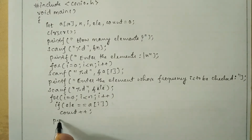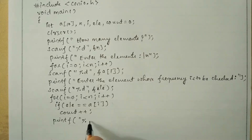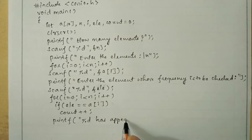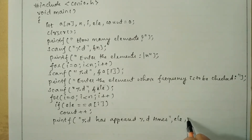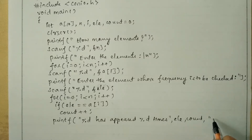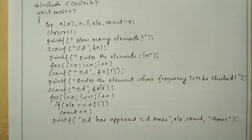Now I am going to write the printf statement: "%d has appeared %d times", passing element and count. This prints how many times the element has appeared. Next I write the getch() function and the curly closing brace.